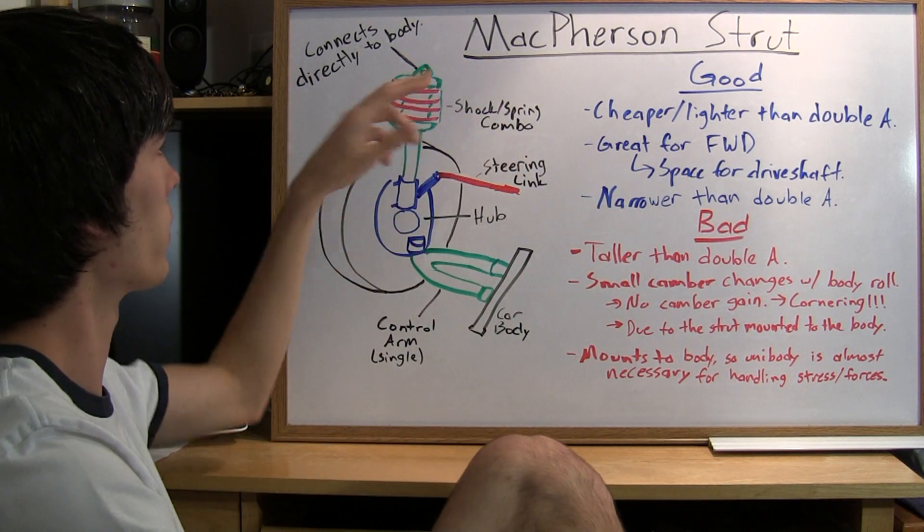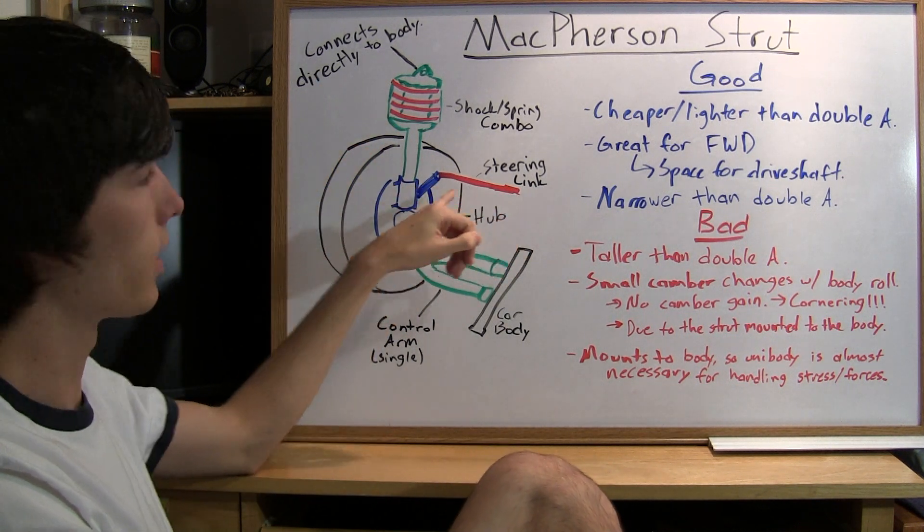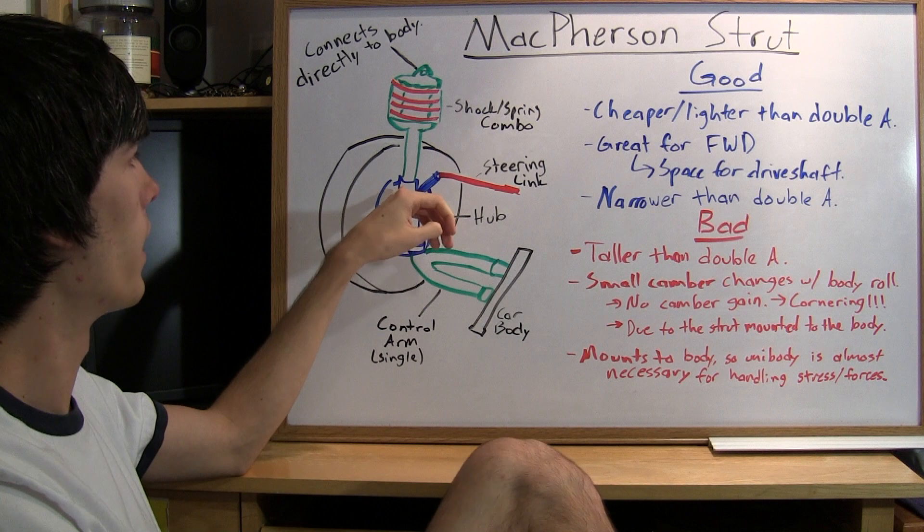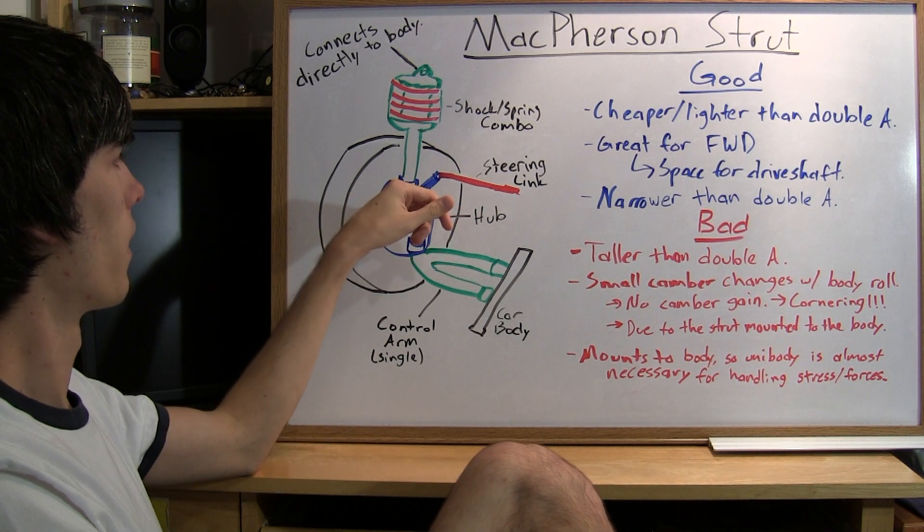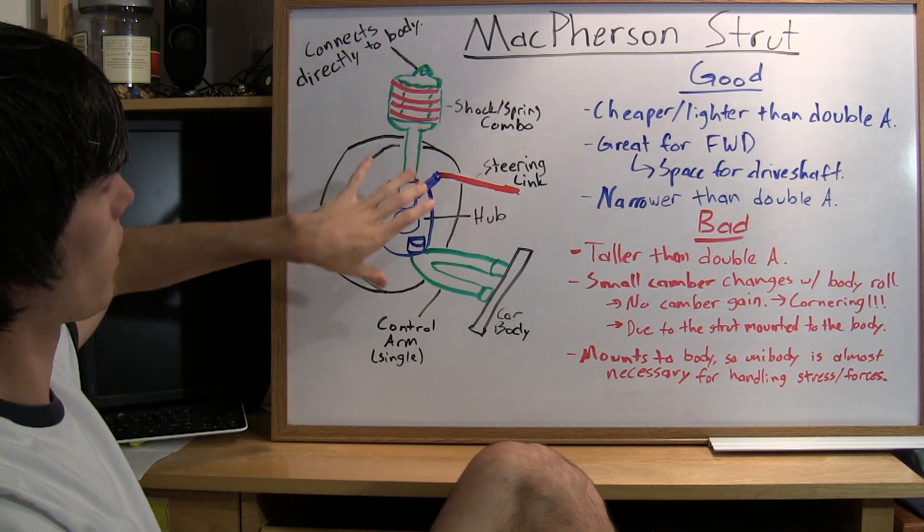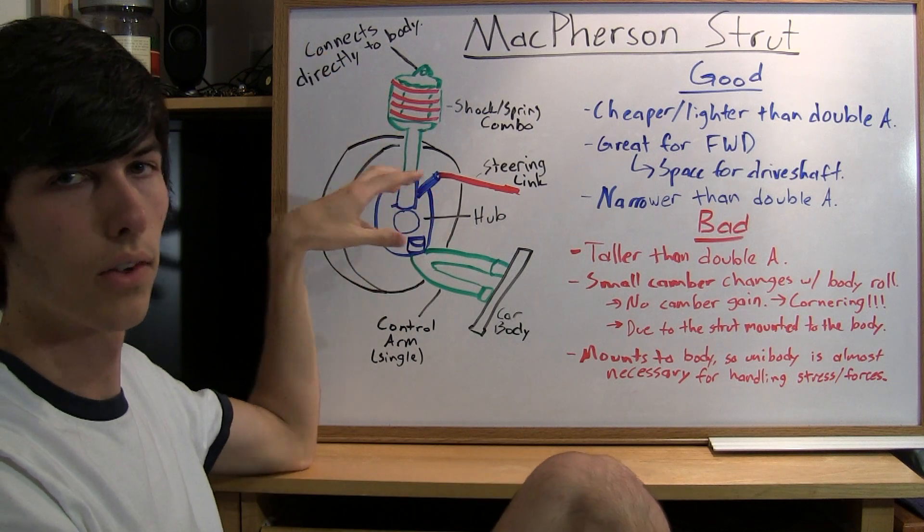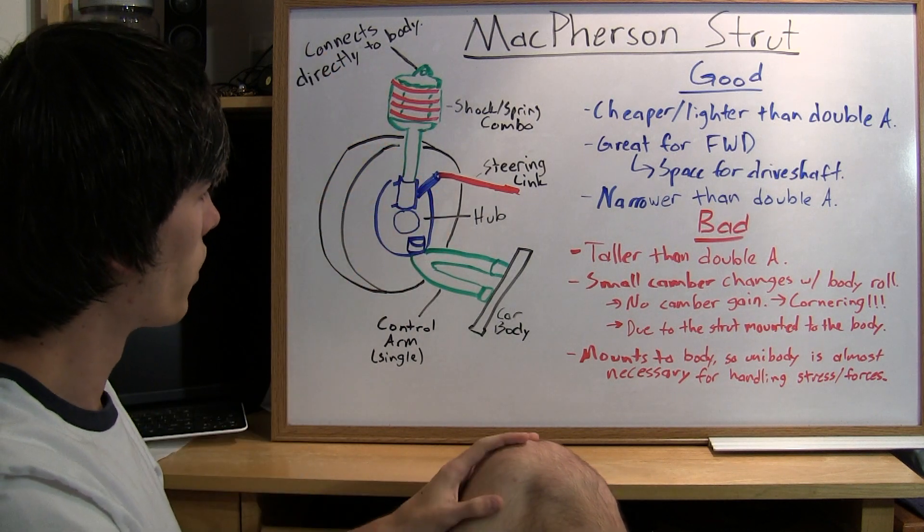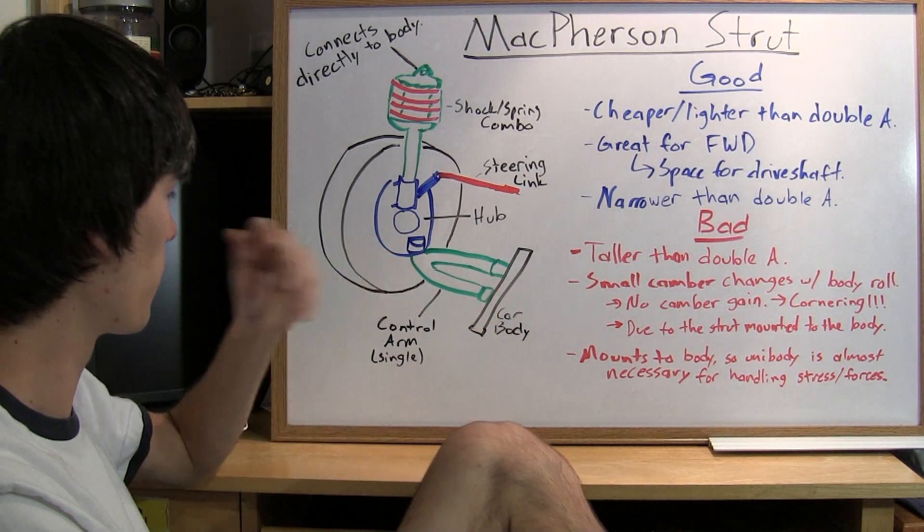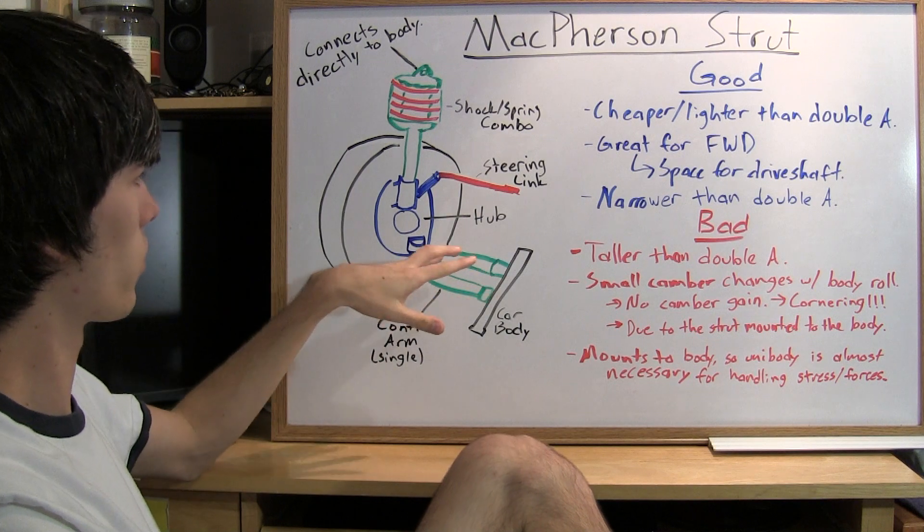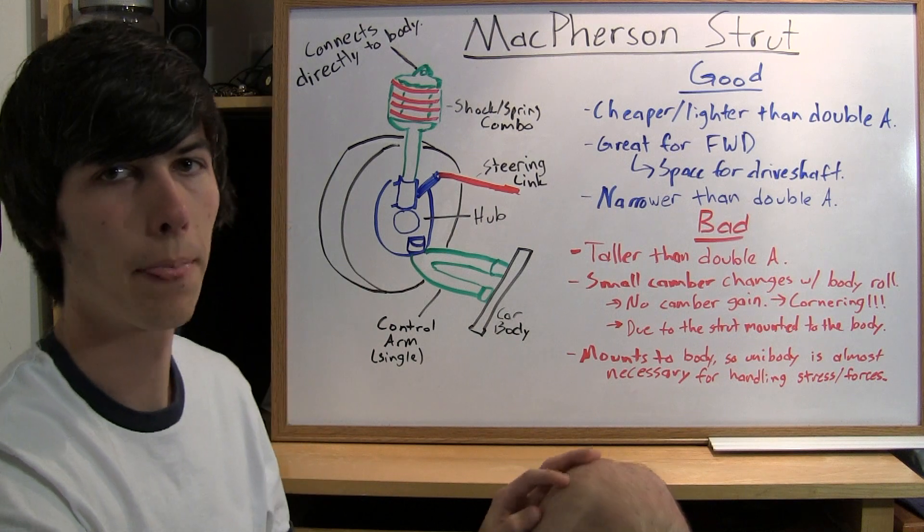It's directly connected at the top with this shock spring combo. Then you have a steering link that also connects to this hub, right where the shock and spring combo comes in. In essence, you can think of the strut as also the steering axis for this tire. That's the basic setup - you've got this single bottom control arm connected to the car body or frame, and this open space in the center which is beneficial, as I'll point out.